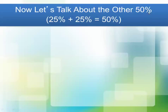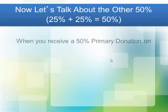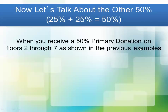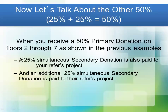Now let's talk about the other 50%, which is two 25% secondary donations. When you add them up, they equal that other 50%. When you receive a 50% primary donation on floors two through seven, a 25% simultaneous secondary donation is paid to your referrer's project, and an additional 25% simultaneous secondary donation is paid to their referrer's project. These two 25% donations make up the other 50%.